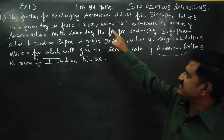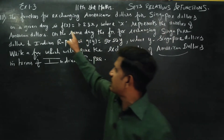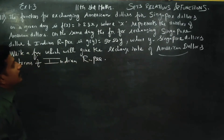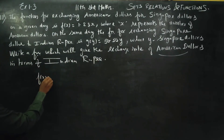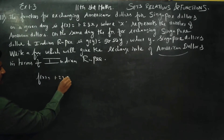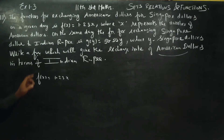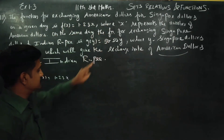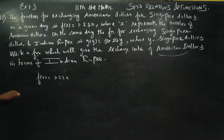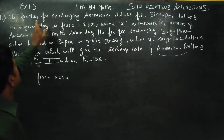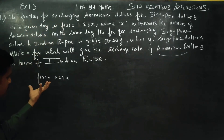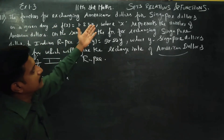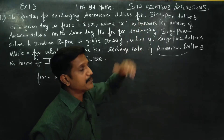The function for exchanging American Dollars for Singapore Dollars on a given day is F of X. This function is doing some work — it will exchange American Dollars for Singapore Dollars.